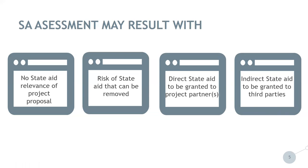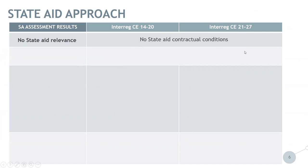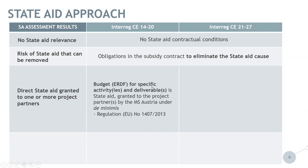We will now provide an overview of the Central Europe Programme approach to State Aid and compare the period 2014-2020 with the period 2021-2027. In cases where there was no State Aid relevance, the approach from the 2014-2020 period applies in the 2021-2027 period as well. The same applies for the risk of State Aid which can be removed — obligations in the subsidy contract aimed at eliminating State Aid costs will have to be respected. When it comes to granting direct State Aid to one or more project partners, in the 2014-2020 period, the ERDF budget for specific activities and deliverables which were State Aid affected was granted to the project partner by the member state Austria under the de minimis rule. This has changed in the 2021-2027 period.